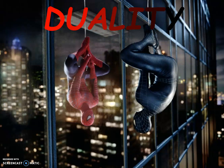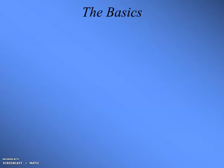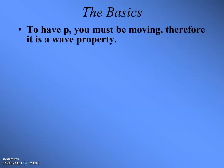The first thing we're going to do is expand duality a little bit. You've taken some basic ideas behind duality — the whole particle and wave nature of light — and I showed you how it actually applies to electrons and pretty much everything. But we're going to expand on that. If you have momentum, you have to be moving, and motion is a wave property, so therefore momentum is more of a wave measurement than a particle measurement.